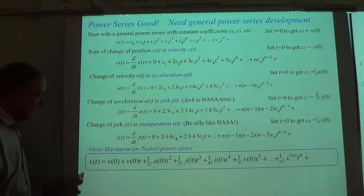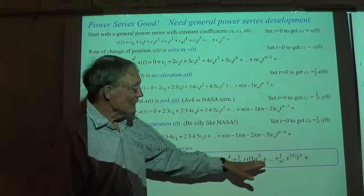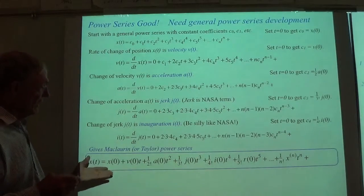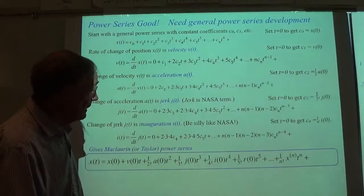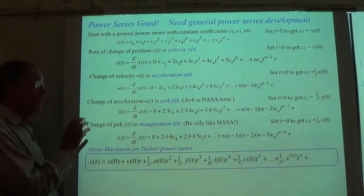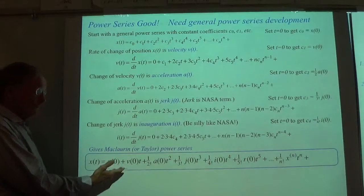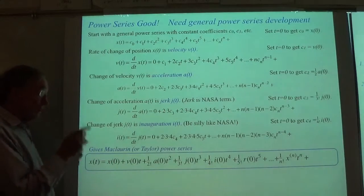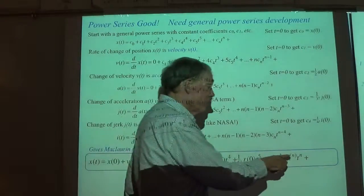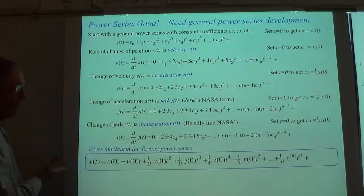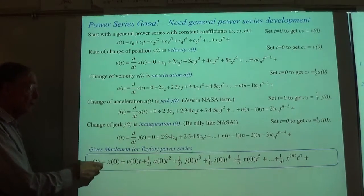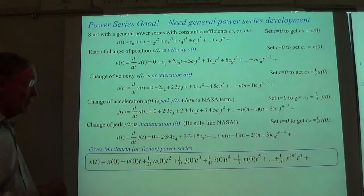This is the Maclaurin series for any function whose derivatives and value are definable at the origin, and it generalizes easily to a series around any point. Before these two lectures are over, I want to show you the generalization of this series for complex numbers — a series that allows not just positive powers but also a small (or even infinite) number of negative powers as well.